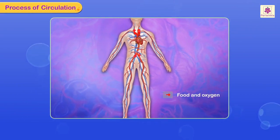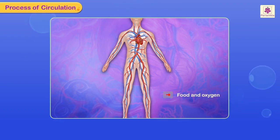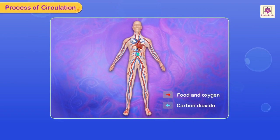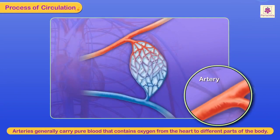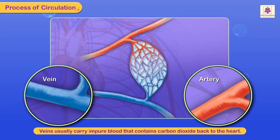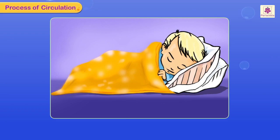Blood carries digested food and oxygen to each and every cell of the body. It also carries carbon dioxide and waste material back to the heart, which then sends this impure blood to the lungs to be purified. Arteries generally carry pure blood containing oxygen from the heart to different parts of the body, and veins usually carry impure blood containing carbon dioxide back to the heart. This goes on continuously, even when you are sleeping.